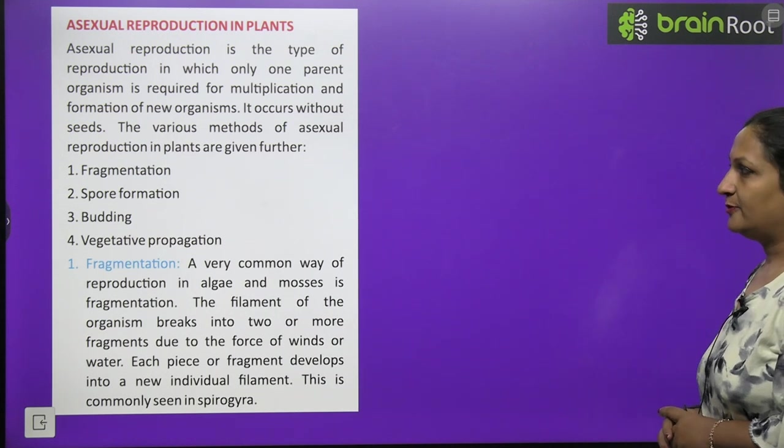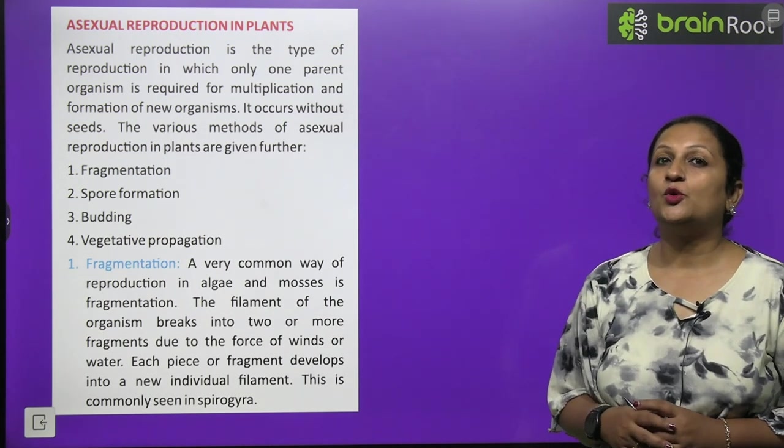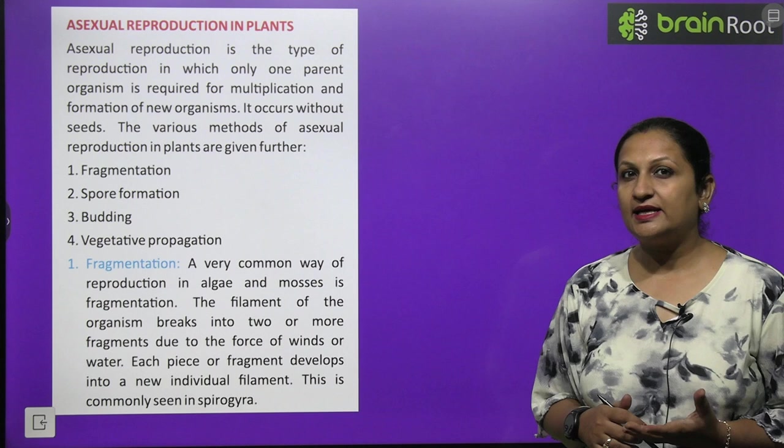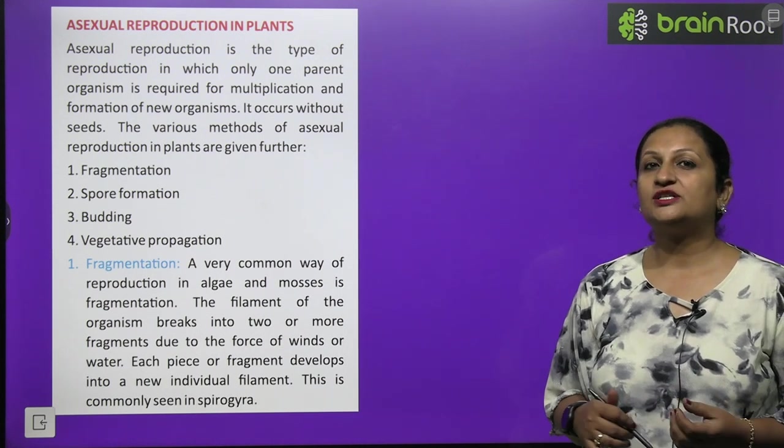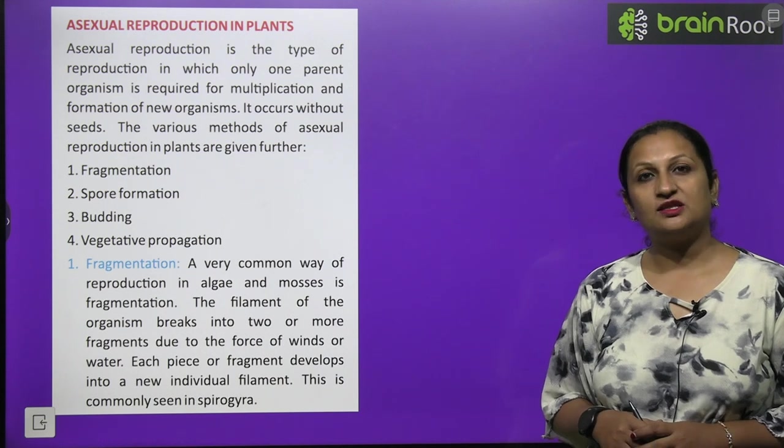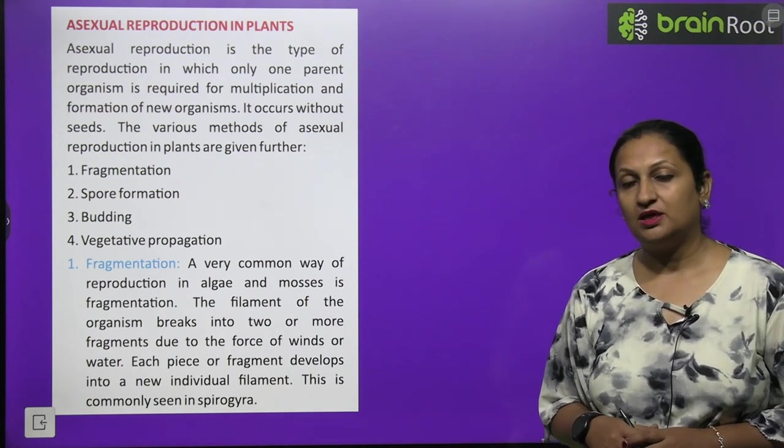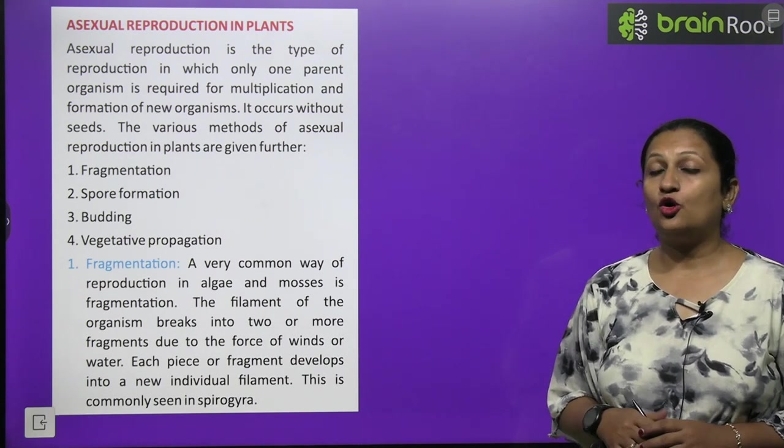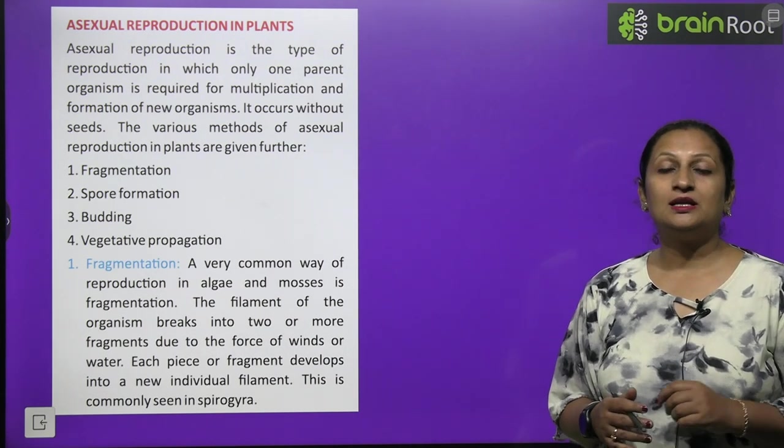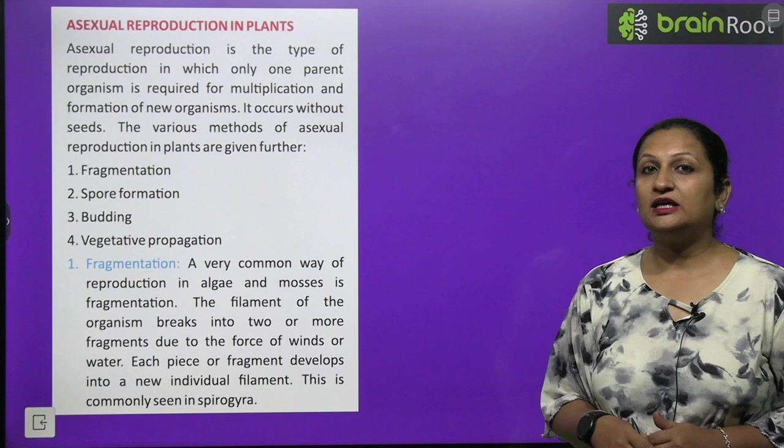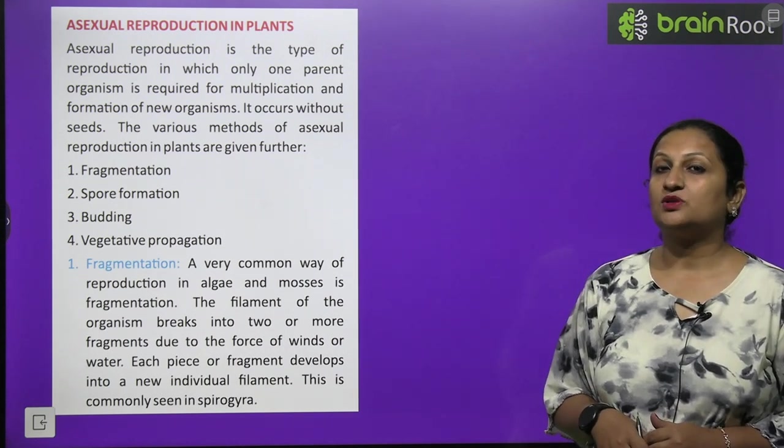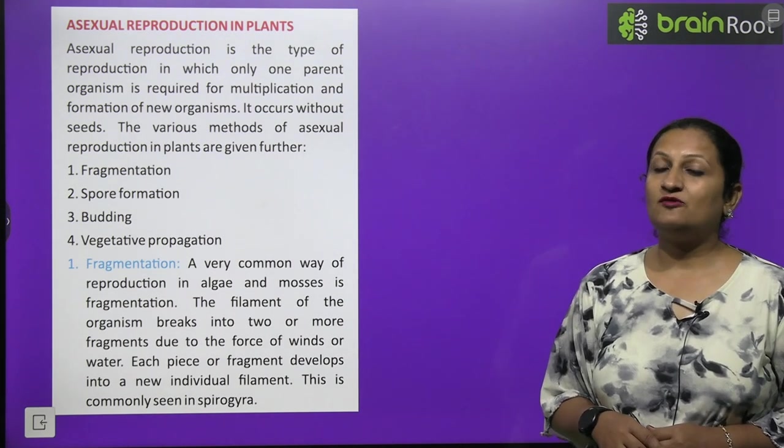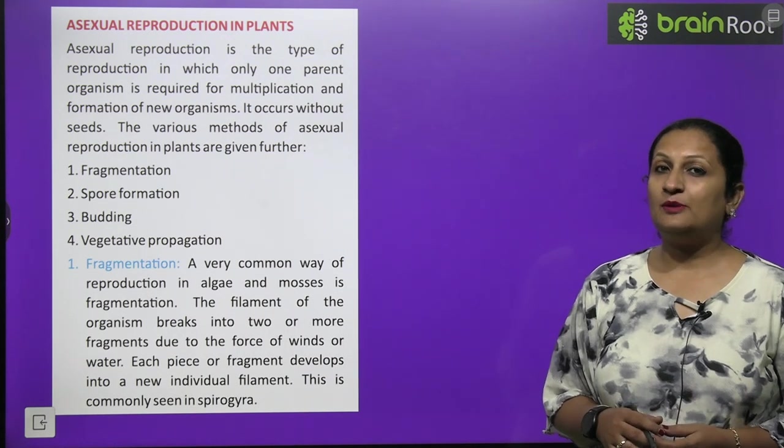The second is spore formation. In this, spores are formed inside sporangia, and when they get favorable conditions, they burst and wherever the spores fall, if they get favorable conditions there, they develop into new organisms. Spore formation can be easily seen in case of bread mold. When bread becomes stale, green colored patches form on it. These are actually bread mold which reproduce by the process of spore formation. Spores are stored inside sporangia, and when they get favorable conditions, they burst and wherever spores fall, new bread mold development will happen.